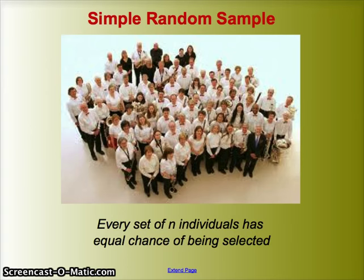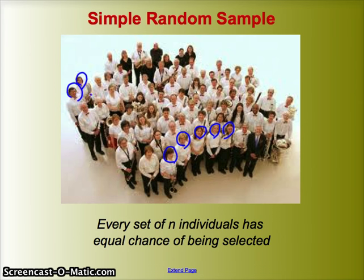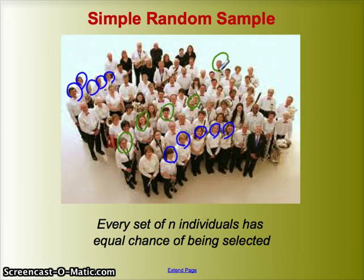Just another view of simple random sampling. Let's say this is the population I'm selecting from. My method is a simple random sample. If these five people in the front row have exactly the same chance of being selected as these five people in the back row, have exactly the same chance of being selected as any other five people that you see in the picture — if those groups of five all have an equal chance of being selected, then my methodology is a simple random sample.